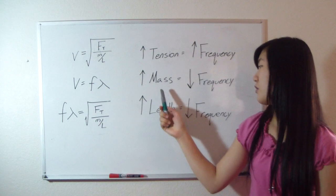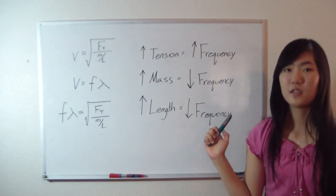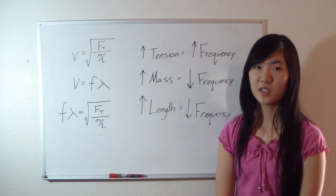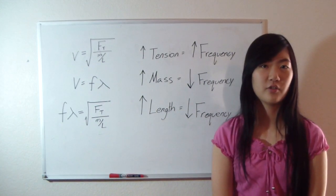When the mass of a string and the length of a string get larger, the frequency gets lower, which results in a lower pitch. Because the bass has the longest and most massive strings, it has the lowest pitch in a stringed orchestra.